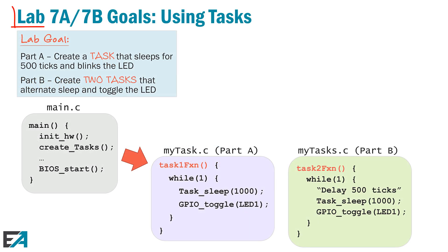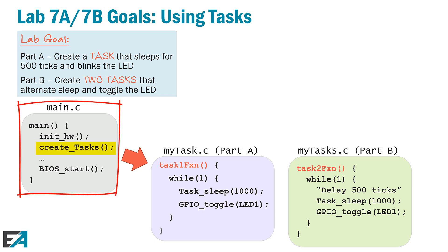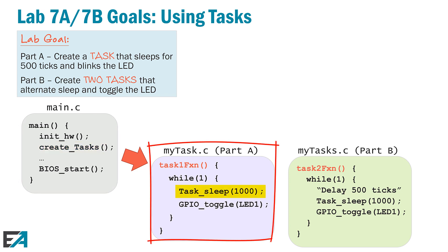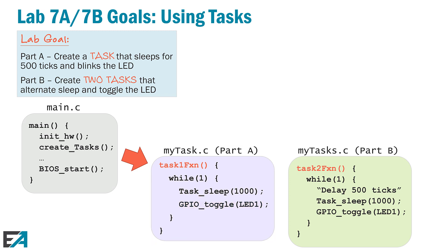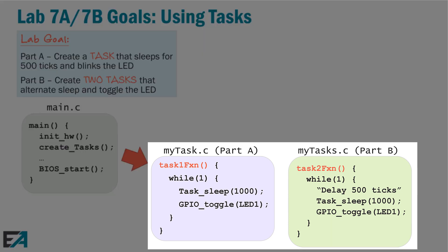At the end of this chapter, we have two labs — part A and part B. In main, we're going to create a task for part A and tasks (plural) for part B. Part A: create one task that sleeps for a thousand ticks — basically a second — toggles an LED, then goes back to sleep for another second, and we'll build, load, run, and look at that in ROV. Part B gets more interesting: we add two tasks at the same or different priority levels that ping-pong back and forth, each toggling the LED every 500 ticks, so together they produce a one-second toggle.